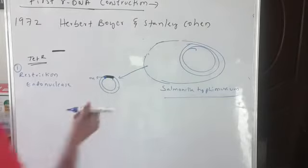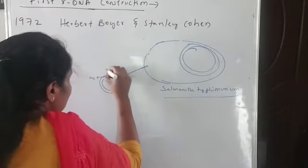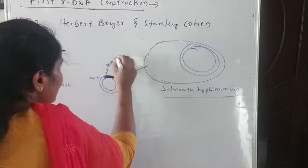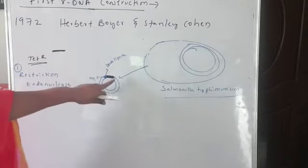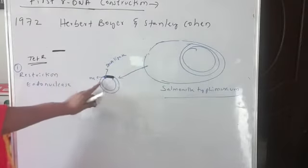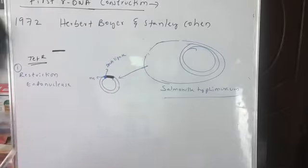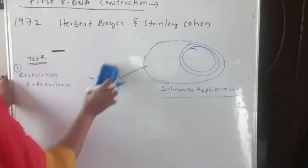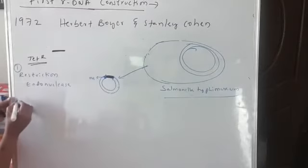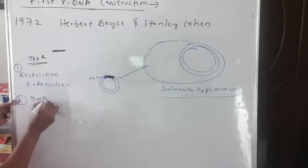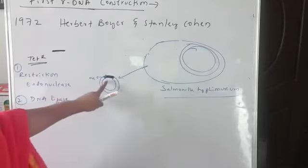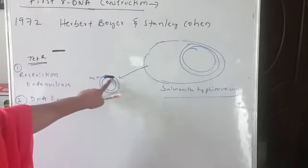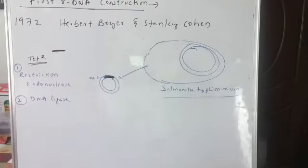What is that enzyme? It is DNA ligase. DNA ligase helps to bind the tetracycline resistance gene to the plasmid DNA. DNA ligase helps to bind the gene of interest to the plasmid.